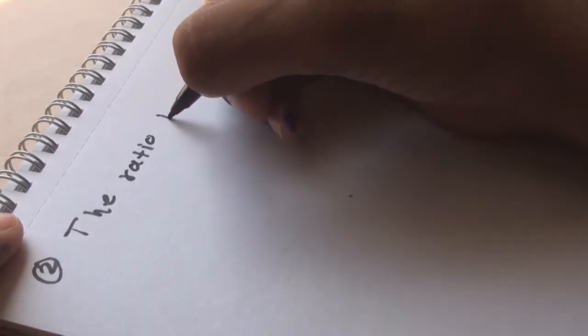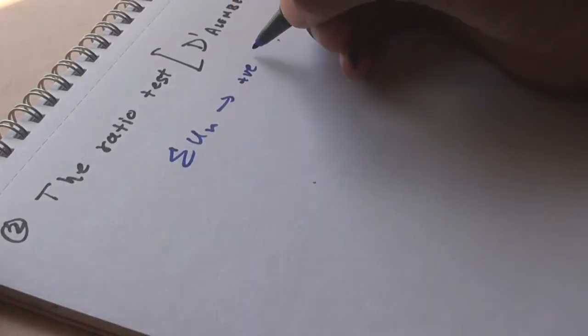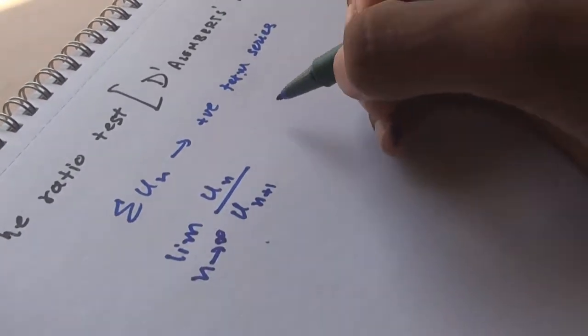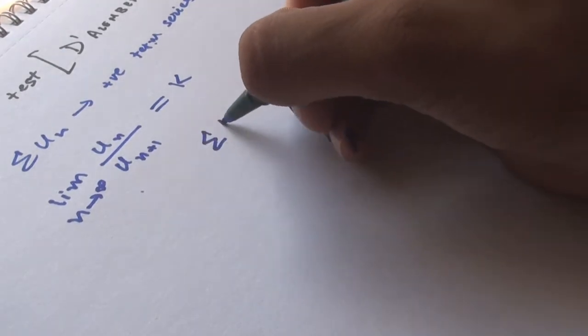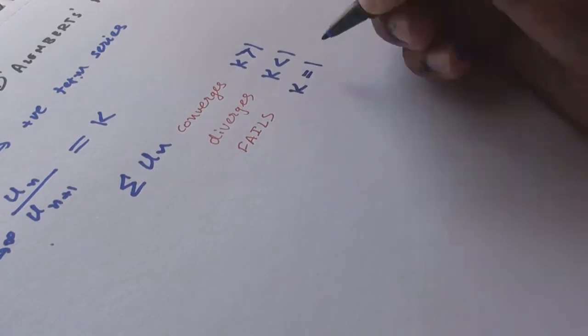The ratio test or the D'Alembert's ratio test. If un is a positive term series such that lim(un/un+1) as n→∞ equals k, then the series un converges for k > 1, diverges for k < 1, and the test fails for k = 1, which means that we have to move on to the next test.